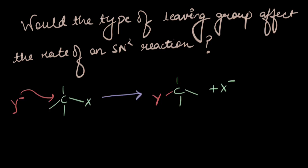In this reaction, the attacking nucleophile Y- attacks the carbon attached to the leaving group, and the leaving group X- leaves. All of this happens in a single step — Y- attacking and X- leaving happens simultaneously. Therefore, the more stable the leaving group, the faster it would leave and the greater the rate of the reaction.